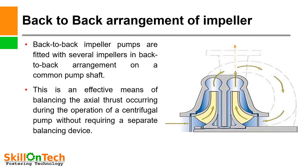Back-to-back arrangement of impellers: You can see a picture of back-to-back impeller arrangement. There are two impellers — impeller number 1 and impeller number 2 — arranged back to back. The axial thrust produced by both impellers cancels each other; one impeller discharges in one direction and the other in the opposite direction, with suction forces also nullifying each other. Back-to-back impeller pumps are fitted with several impellers in back-to-back arrangement on a common pump shaft. This is an effective means of balancing axial thrust during centrifugal pump operation without requiring a separate balancing device.